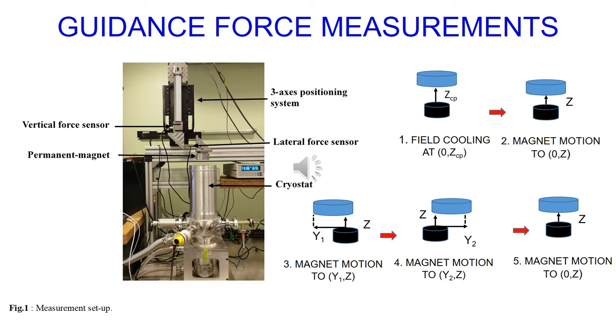Then, the magnet is moved parallel to the superconductor surface to y1, where the direction of motion is reversed, and distance y decreases to y2 before increasing to y equal to zero. The guidance force is recorded at each step of the measurements.